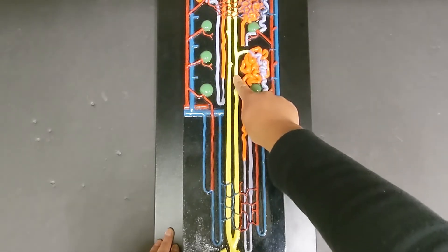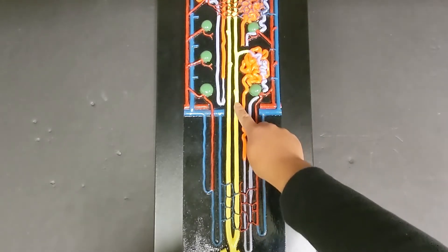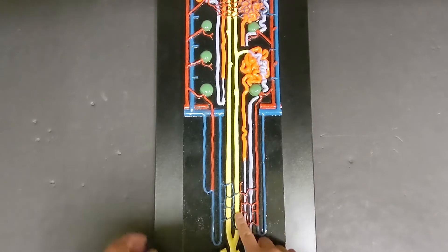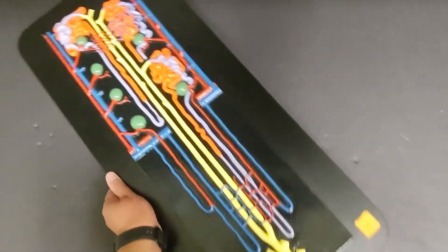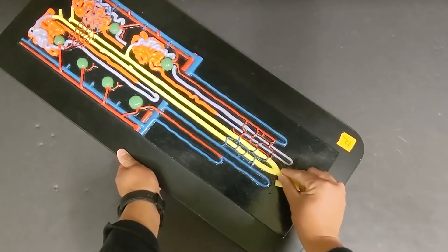So the collecting duct is going to be this one, and you can see that it is going to go down all the way until you get to the very bottom where you can see collecting ducts joining together.